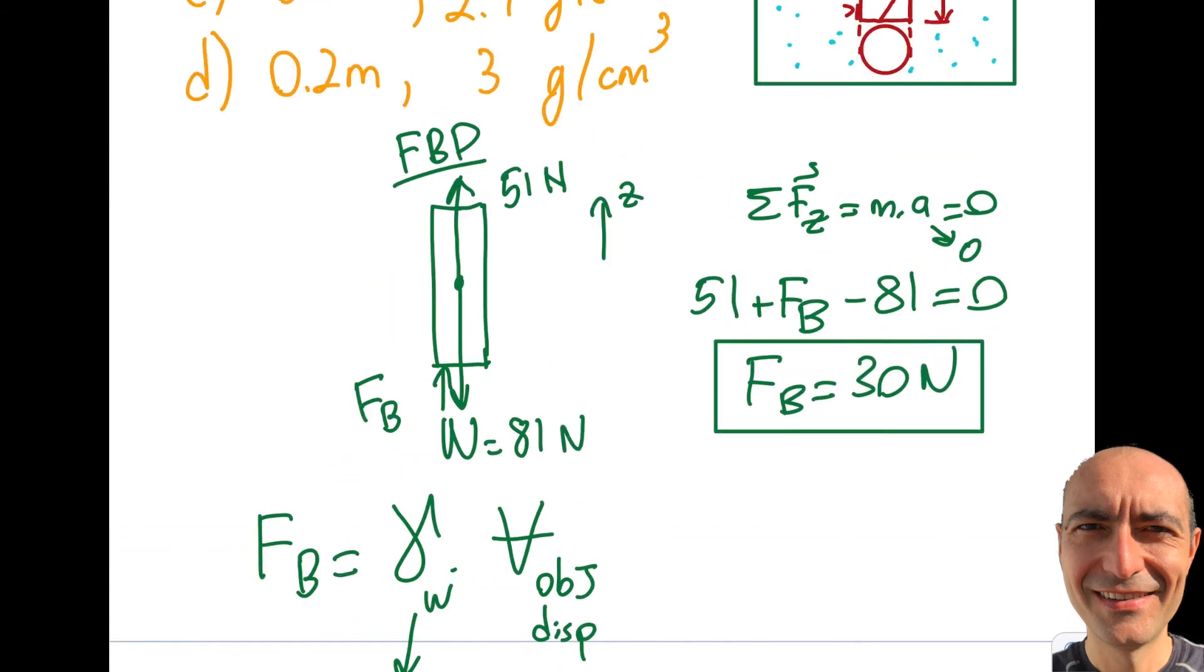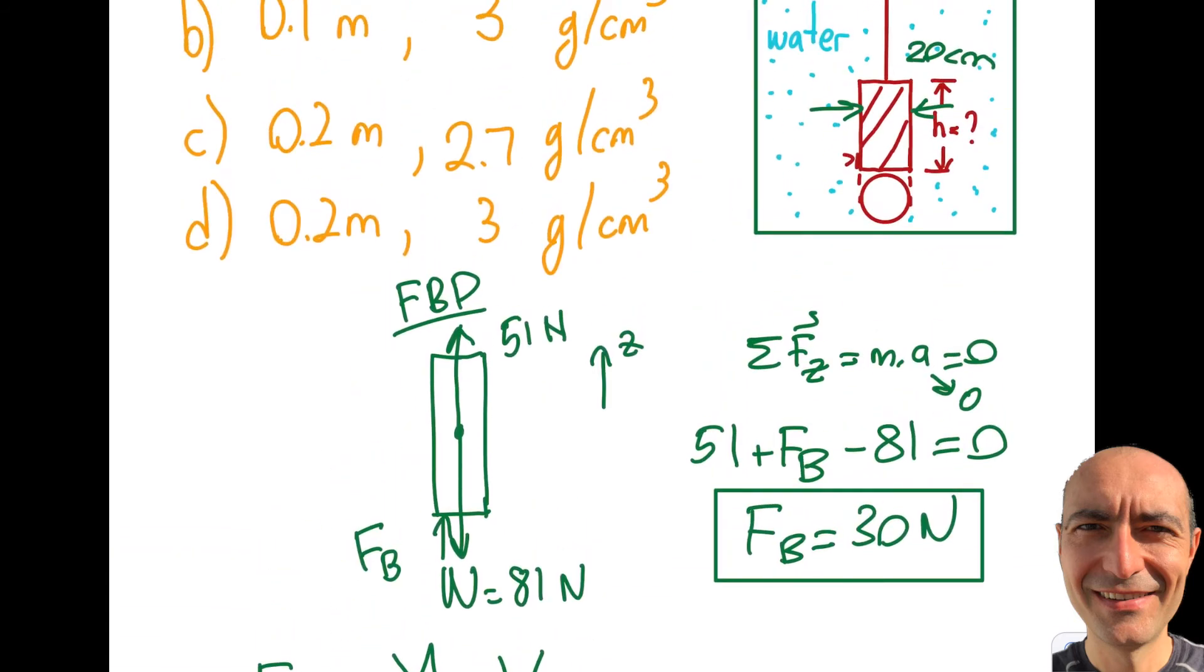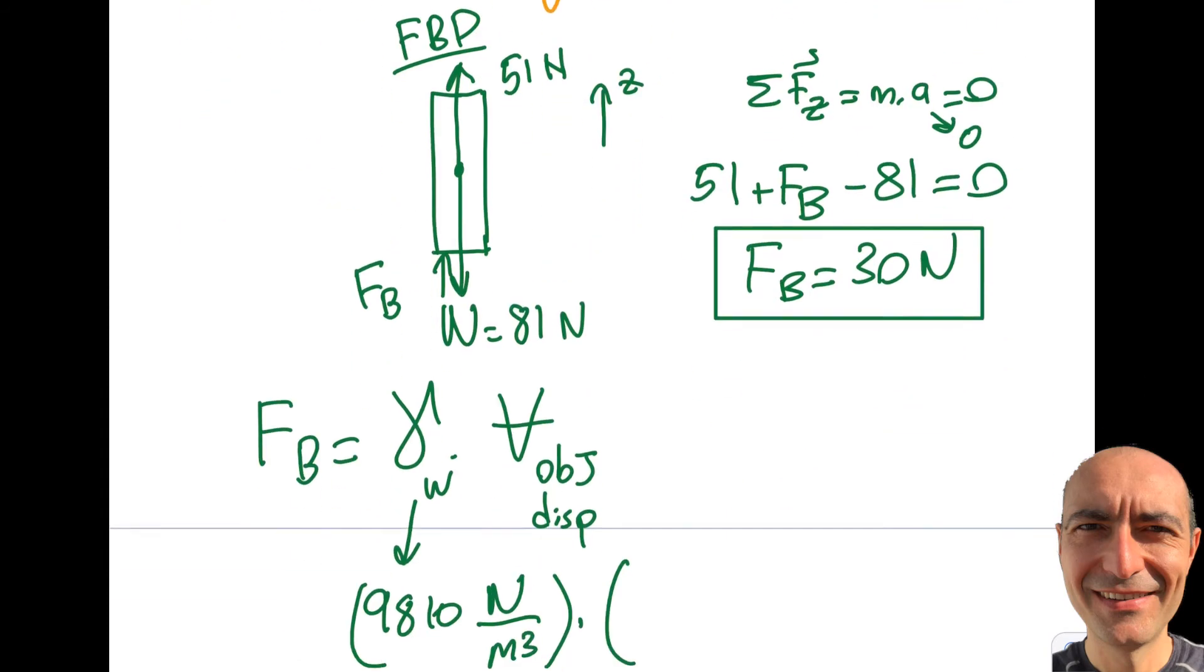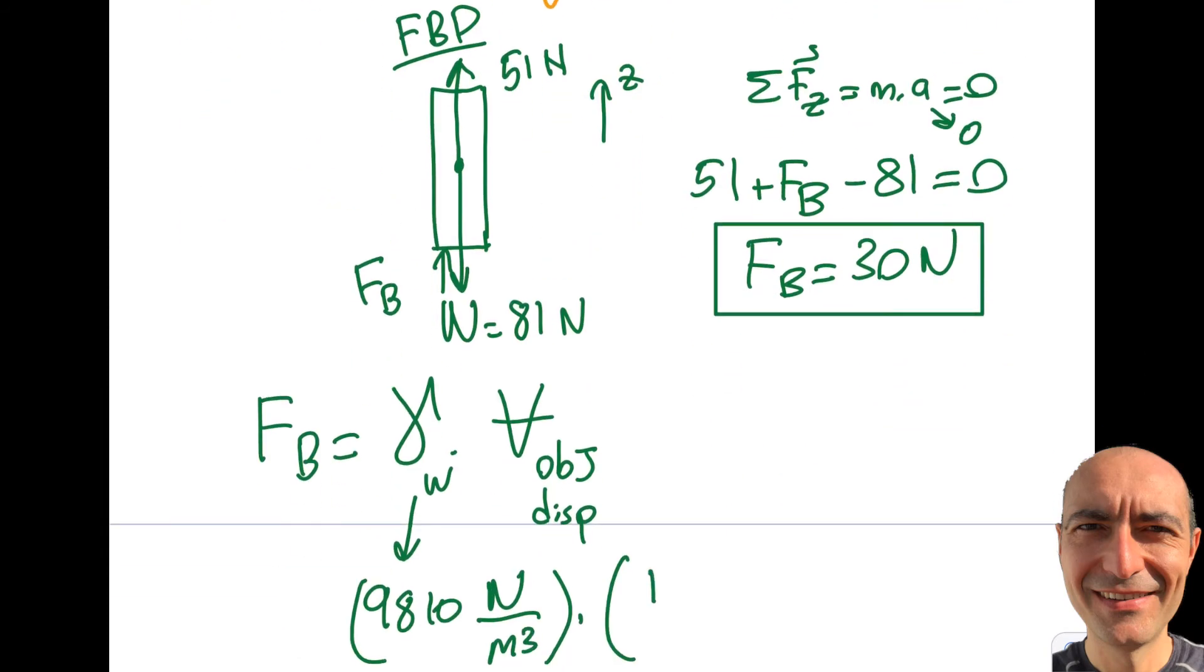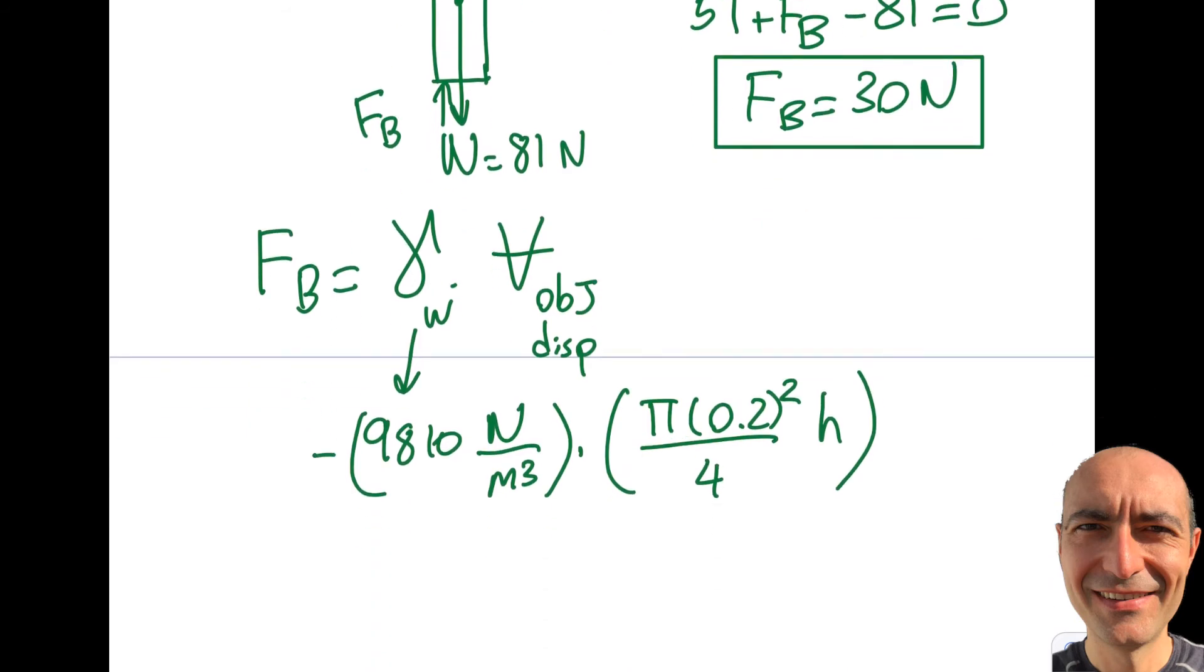How about the volume of the object? As this is a cylindrical, you will see that the diameter is 20 centimeters and the height is being asked. So let me go ahead and write this. That's going to be π times 0.2 squared divided by 4 times the h. And FB is 30, that I know. Remember, this is meter cube. This is square meter cube. So they canceled. So units match as well.